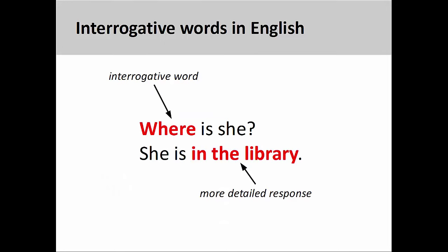Interrogative words are used to introduce a question. Unlike simple yes-no questions, interrogative words require a more detailed response. In a sentence you see on the screen, the interrogative word 'where' inquires about the position of the subject.